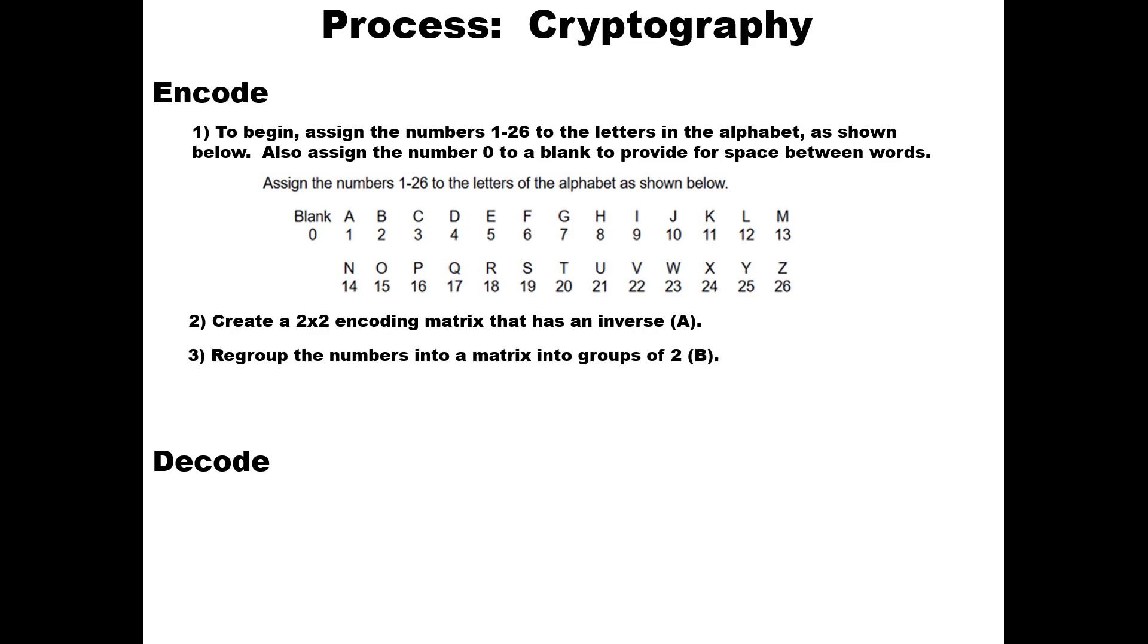We're going to regroup the numbers into a matrix into groups of 2, we're going to call that matrix B. We're going to multiply the encoding matrix by the regrouping matrix, that's A times B, and the result is the encoded matrix D. So basically we're going to take A, the secret 2 by 2 matrix, times it by the matrix we created with the numbers and the letters, and what we get out is D, the encoded matrix.